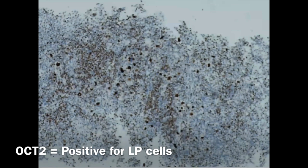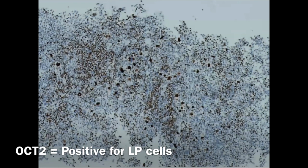Accordingly, these cells are preserving the B cell antigen markers. This is the OCT2. As you can see even from low power, these cells are big and taking the stain. In the classic type, these cells don't preserve the OCT2 stain.